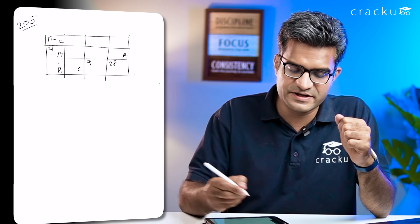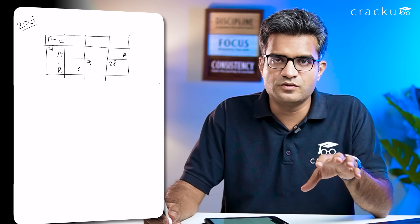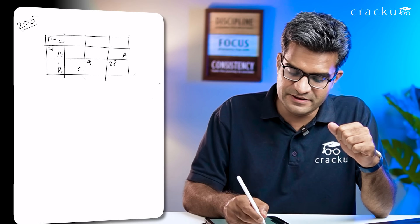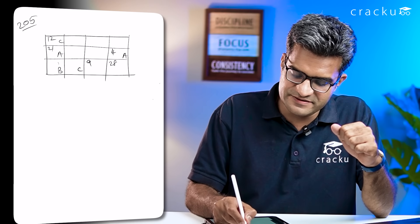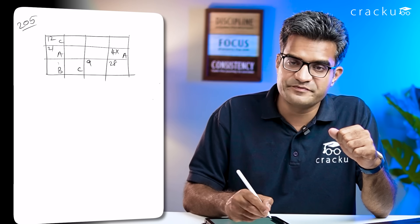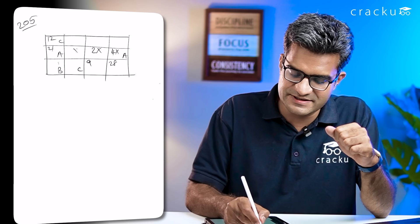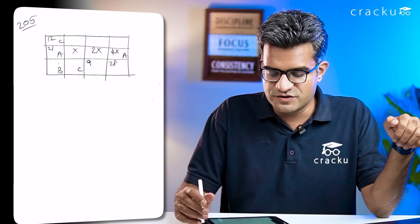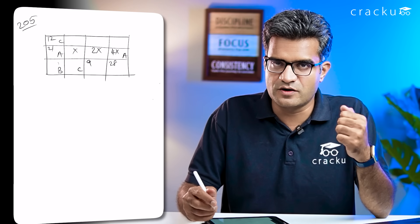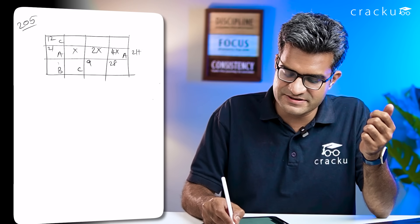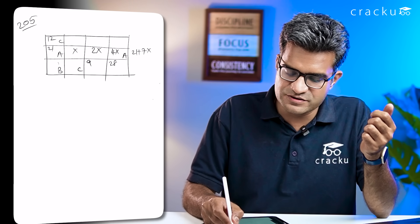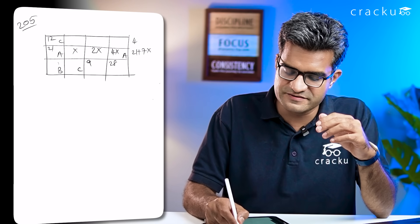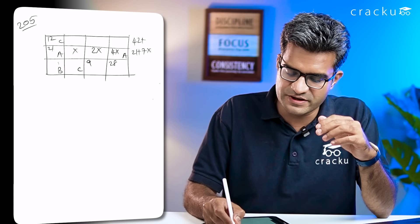We are given some clues. Going through all the clues, I could figure out that certain cells were 4x, 2x, and x — in the ratio 1:2:4. So the sum of the second column could be found: it was 21 plus 7x. We are also told that the sum of the first row is double that of the second row, so I could figure out that the first row sum is 42 plus 14x.